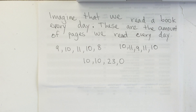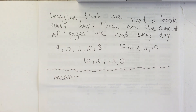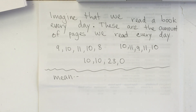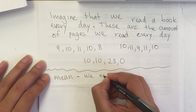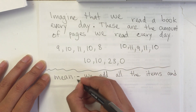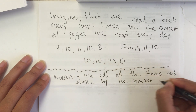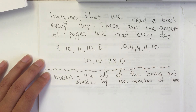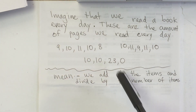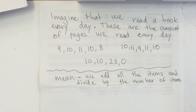We're going to learn how to find first the mean. The mean average is when we add all the items and divide by the number of items. We add all the items and divide by the number of items there are. For example, we're going to add 9 plus 10 plus 11, etc., up until 0, and then divide by how many days did we read — 14.